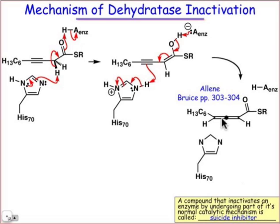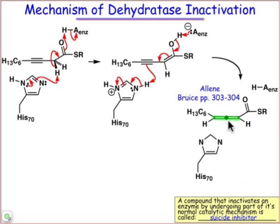The allene functional group has the geometry shown here — you can find a reference in Bruce or other references. The allene has an sp-hybridized carbon represented by that dot, and then two sp2-hybridized carbons on either side of it. So it's basically two double bonds juxtaposed to one another. The imidazole is back to its neutral state.